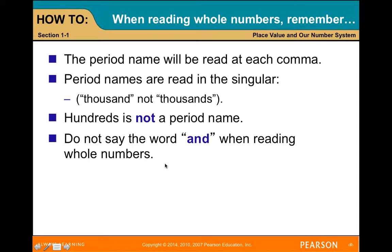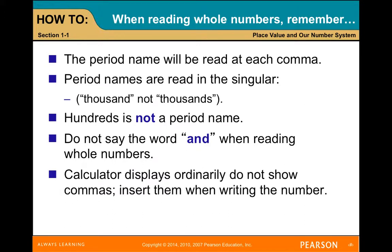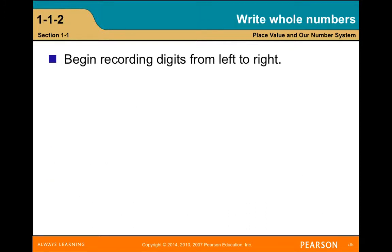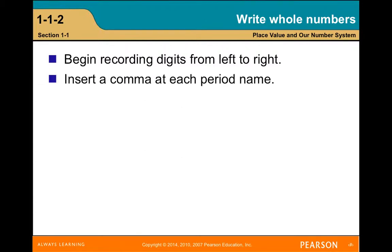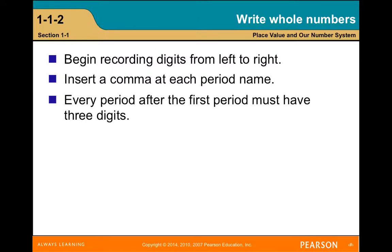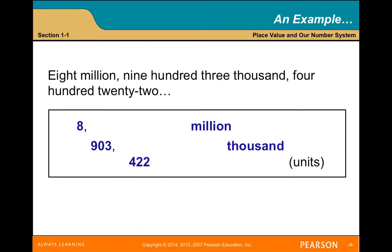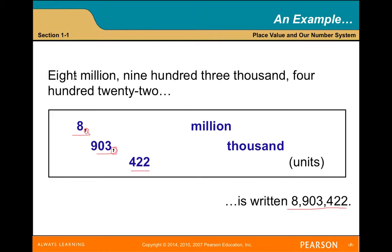Do not say the word 'and' when reading whole numbers — it's just 'three million eight hundred,' not 'three million and eight hundred.' Calculator displays ordinarily do not show commas, so make sure you put them in when writing a number, especially on homework assignments. You begin recording digits left to right, insert a comma at each period name, every period after the first must have three digits, and insert zeros wherever necessary. For example, eight million nine hundred three thousand four hundred ninety-two is written as 8,903,492.